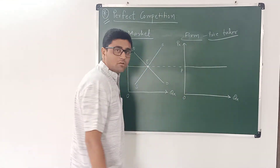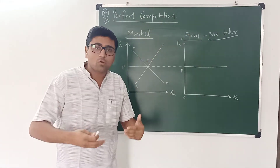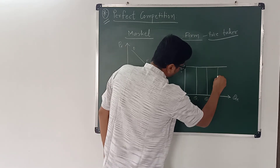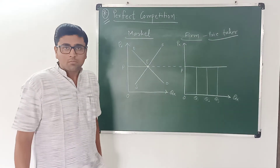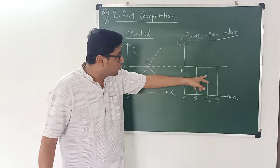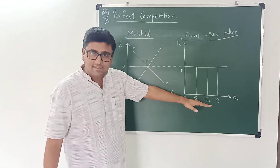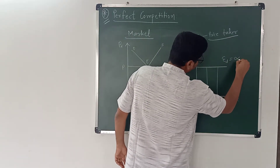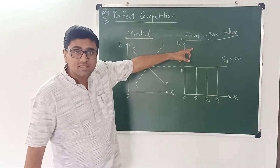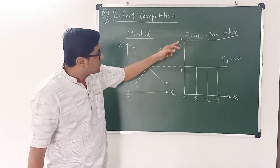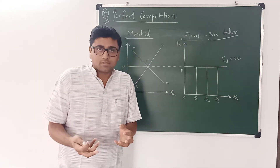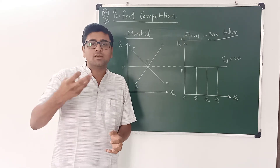This is the demand curve for the firm. At this price, the firm can sell as many units as it wants — for example, Q1, Q2, and Q3 — but there is no change in price, because the price is determined by the market, and therefore the firm is a price taker. This demand curve is a horizontal line, parallel to the X-axis, and therefore demand elasticity is infinity — that is, a perfectly elastic demand curve. Because the share of this firm in the entire market is highly negligible, this firm has no power, no market share, to change the market equilibrium price.